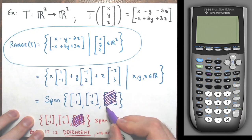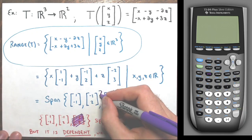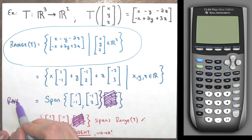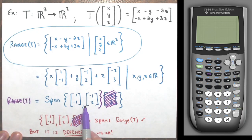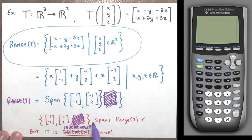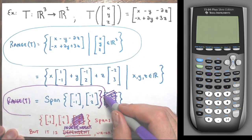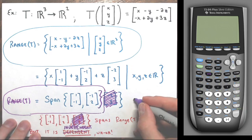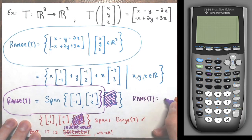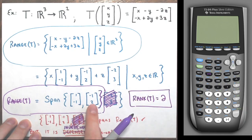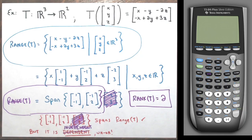Removing the dependent vector, the range of T is the span of just {(1, −1), (−1, 2)}, and these two are linearly independent. So this set is a basis for the range of T, and the rank of T is 2.